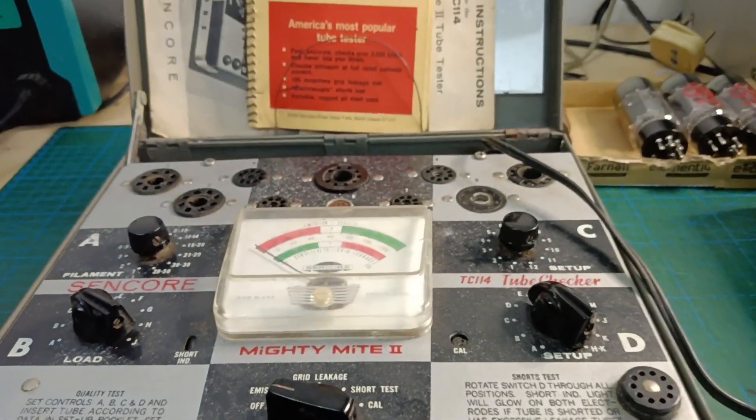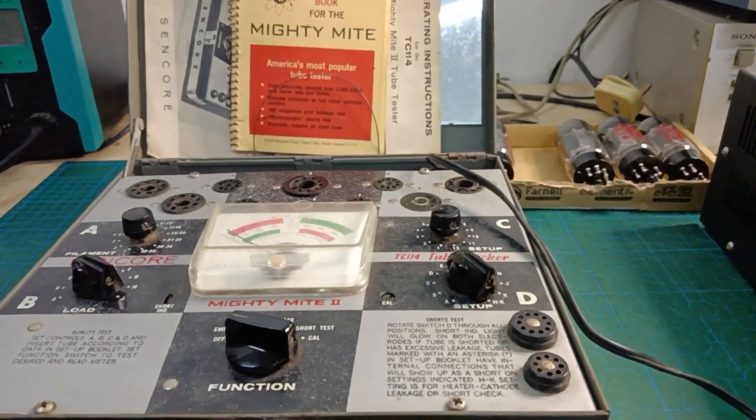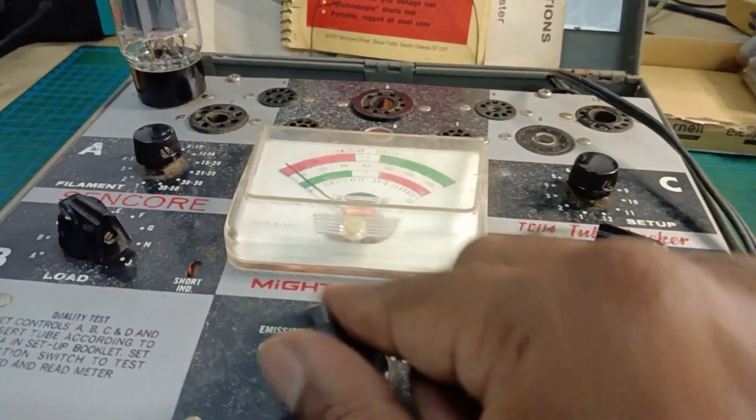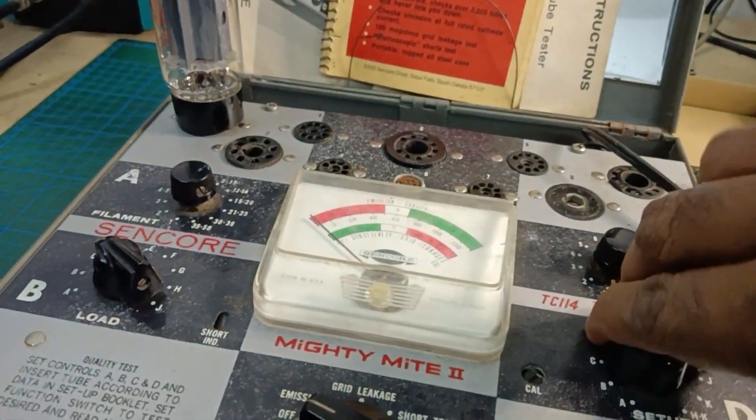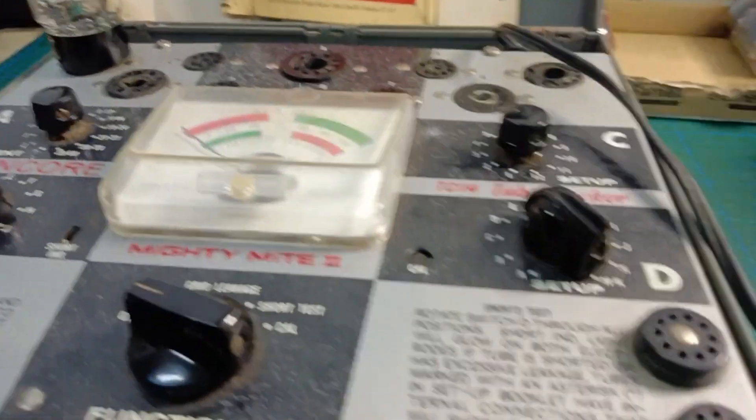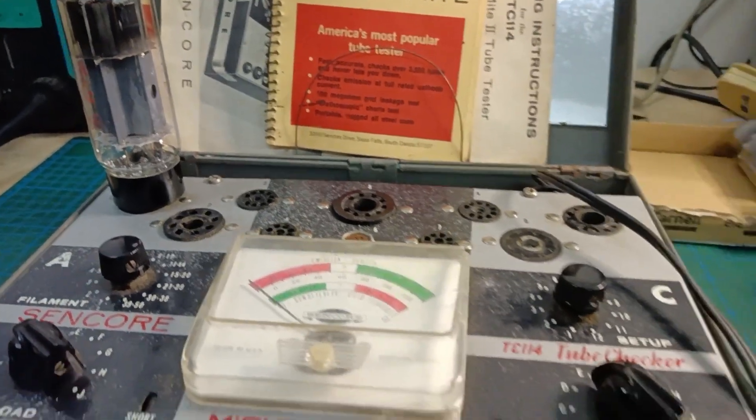Hey everyone, welcome back to the channel. Today I'll be testing four 6L6 vacuum tubes using this Sencor Mighty Might 2 tube tester. This is a vintage piece of gear that still gets the job done, and I'm going to show you step by step how I use it to check these power tubes.